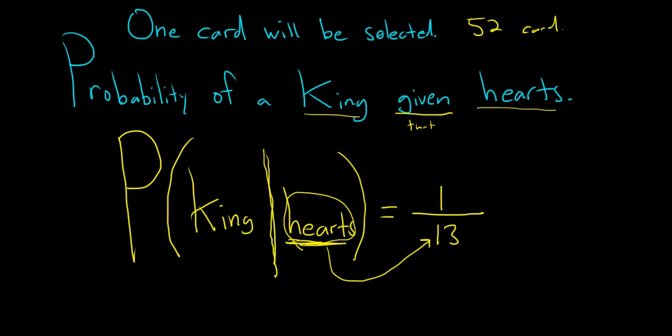Again, you always do this bottom piece first. So you know it's a hearts card that tells you the number of hearts cards. And then up top, it's the number of ways to pick a king. So one over 13. And that's it.